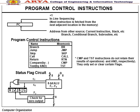Program control instructions and mnemonics: Branch (BR), Jump (JMP), Skip (SKP), Call (CAL), Return (RTN), Compare (CMP), Test (TST). CMP and TEST instructions do not retain their result — they only set or clear certain flags.